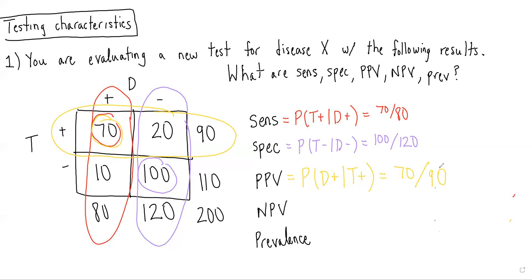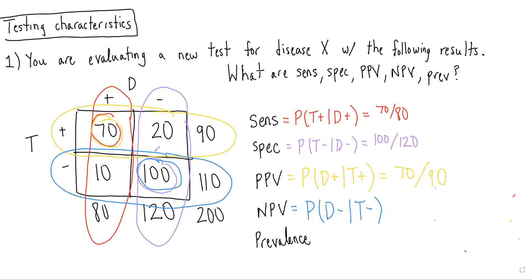And for NPV, we remember this is the probability of not having the disease given you had a negative test result. So this would be 100 over 110.